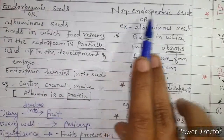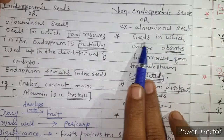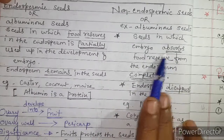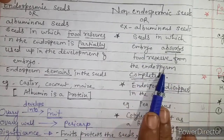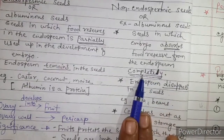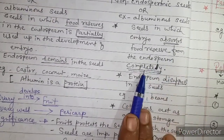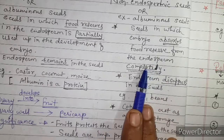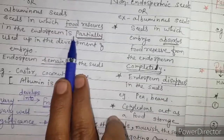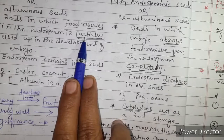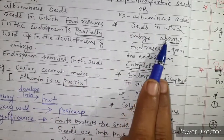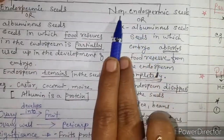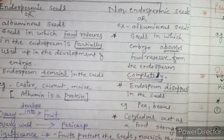In non-endospermic seeds, the embryo during its development absorbs all the food reserve from the endosperm — the endosperm is completely absorbed by the developing embryo. So endosperm is completely utilized; hence there is no endosperm remaining — making it a non-endospermic seed.